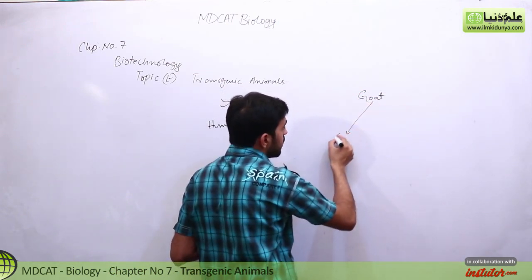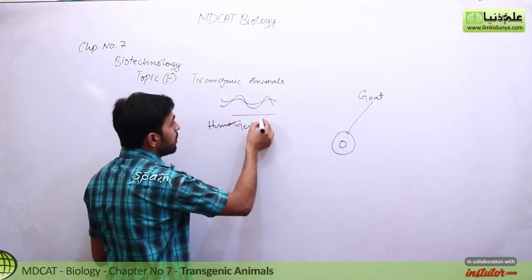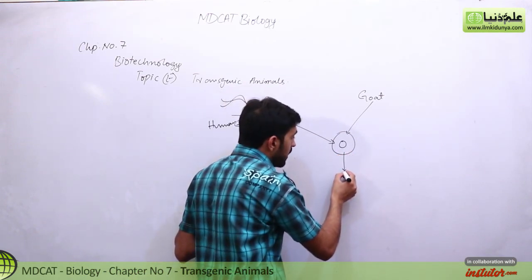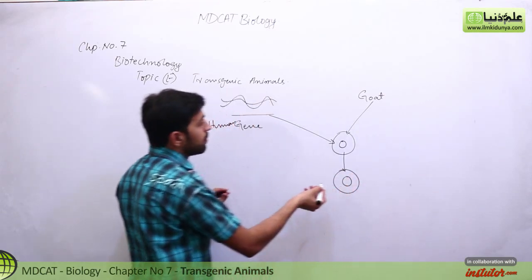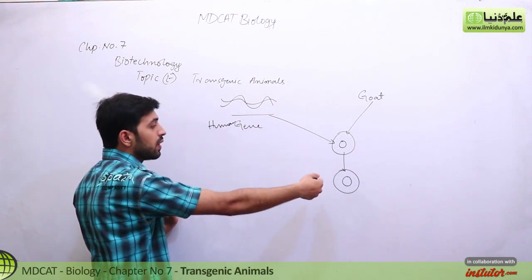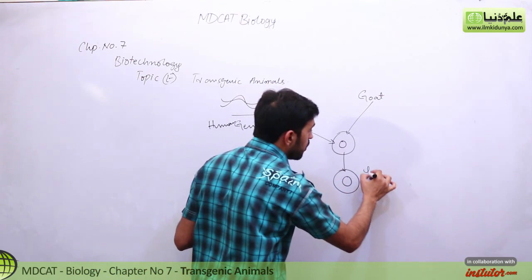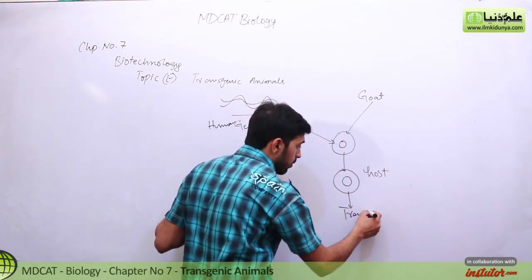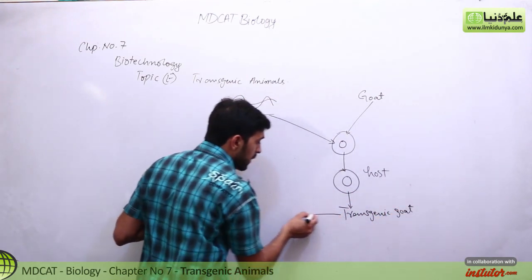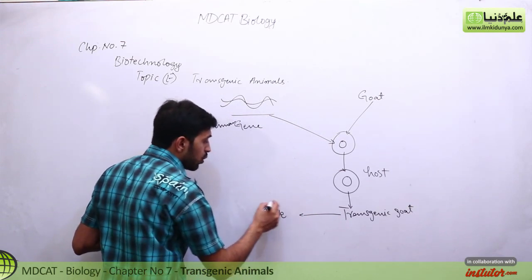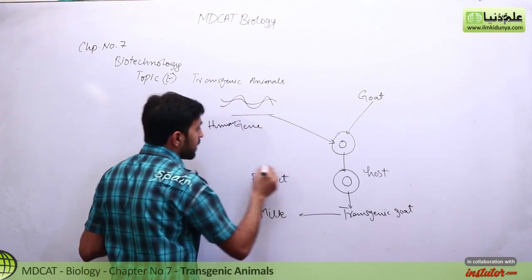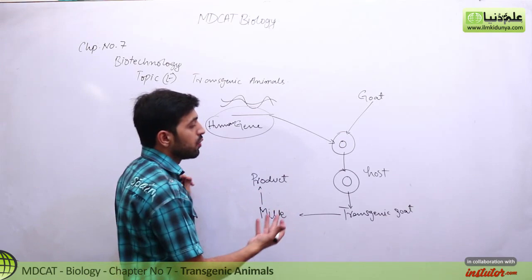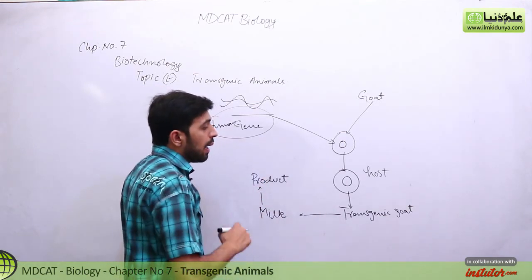We have an egg, we have a nucleus in the egg. Now we have a human gene, we have inserted it into this. And then when it goes to the host, this human gene will replicate and perform its function in the host, and further we have obtained a transgenic goat. And when it comes to milk, we have the human gene products, and we can administer these new products.